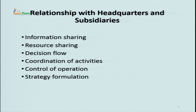Regarding the relationship between headquarters and subsidiaries: MNCs need to have a healthy relationship with their subsidiary units. They need to share information and resources — if they do not, there will be a glitch in decision flow, coordination of activities will not be effective, there will be problems in controlling operations, and strategy formulation and execution will be affected. For a healthy relationship, headquarters and subsidiaries are required to have smooth communication and information flow.